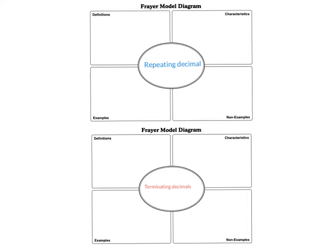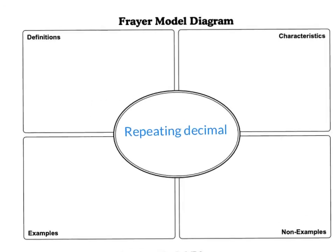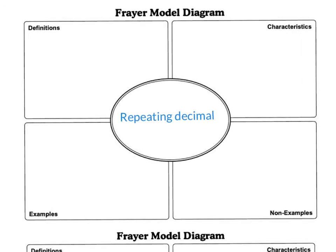In the center circle for the first Frayer model, we're going to put the term repeating decimal. In the top corner, we're going to focus on definitions.